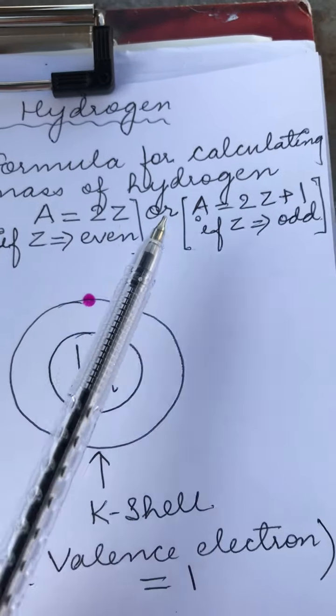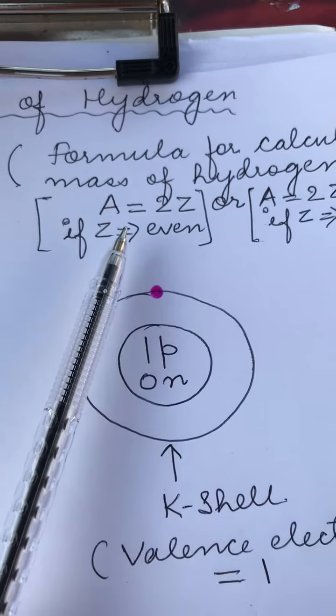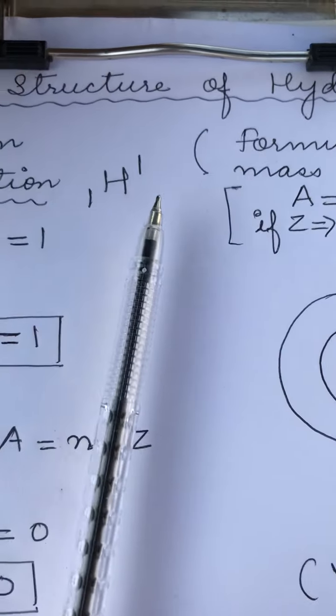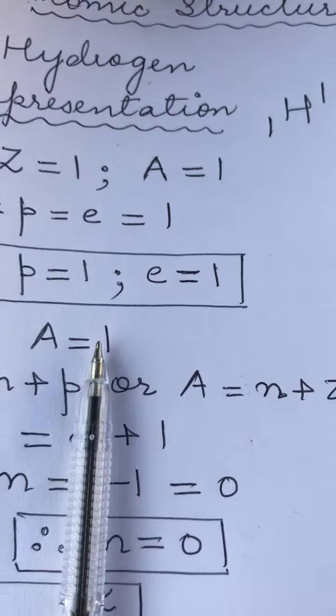However, in case of hydrogen, both these formulas are not applicable and it is one of the exceptions. It has a mass of 1. So considering that, we do the further calculation.